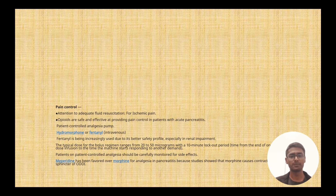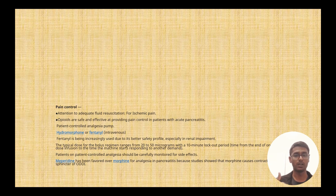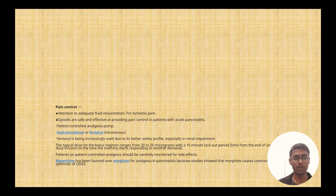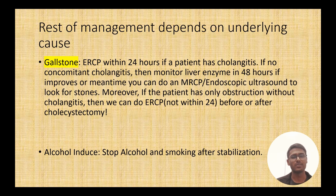For pain control, the first line is always analgesia. Options include morphine, hydromorphone, and fentanyl. Meperidine is considered a good drug but hospitals generally do not use it because nurses are less familiar with the dosage. In the hospital, morphine is used clinically, but for board exam purposes, hydromorphone and fentanyl are the baseline choices.